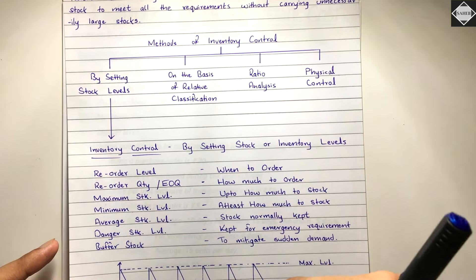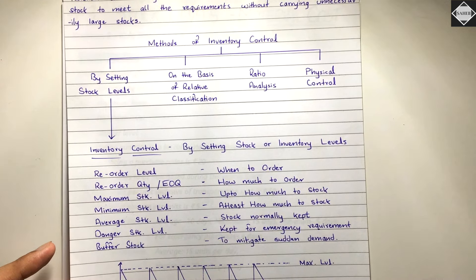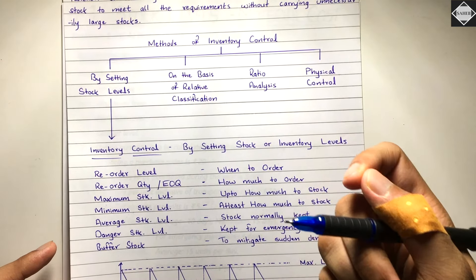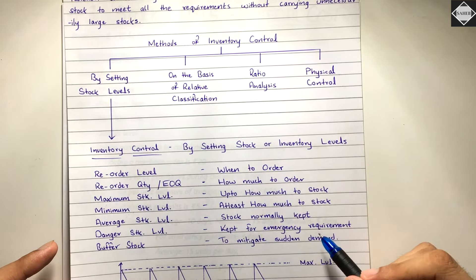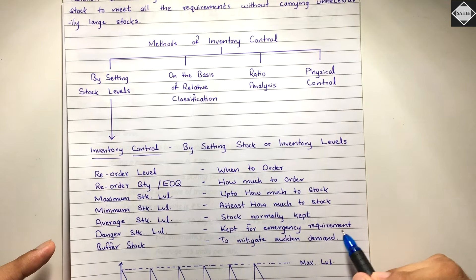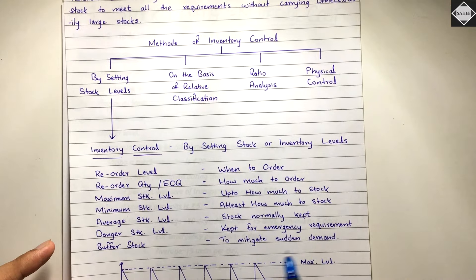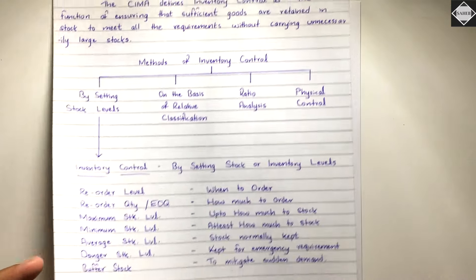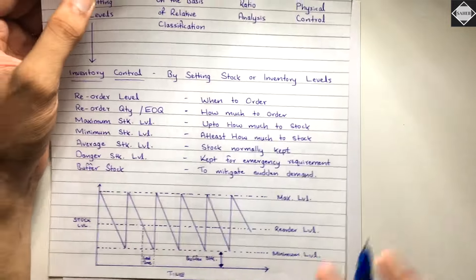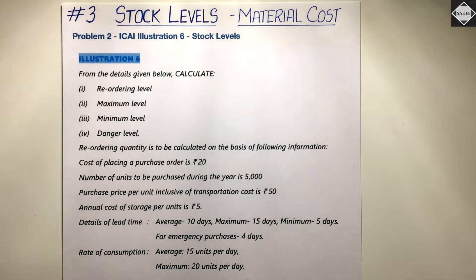Then danger stock level — it's a level below the minimum level. If your stock reaches a danger stock level, you have to make an emergency purchase and stop all normal issues; you just issue on emergency requirement. And then we have buffer stock — buffer stock means hidden stock that you have kept aside to mitigate sudden demand. With the help of a graph I explained everything logically in the first video.